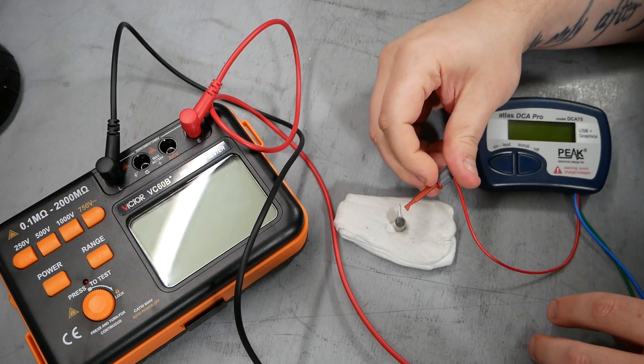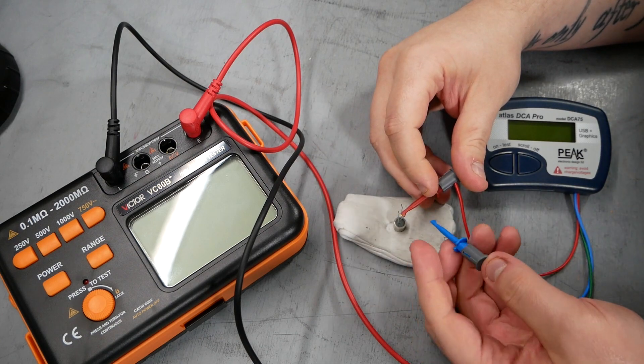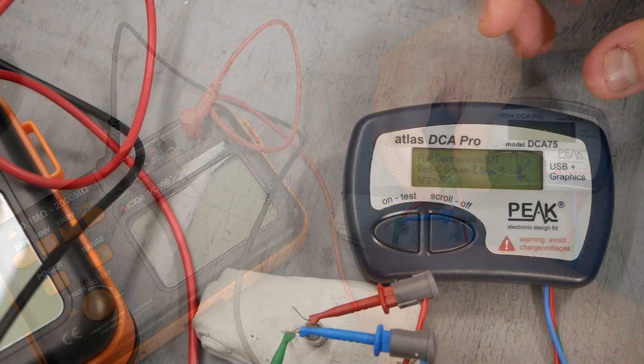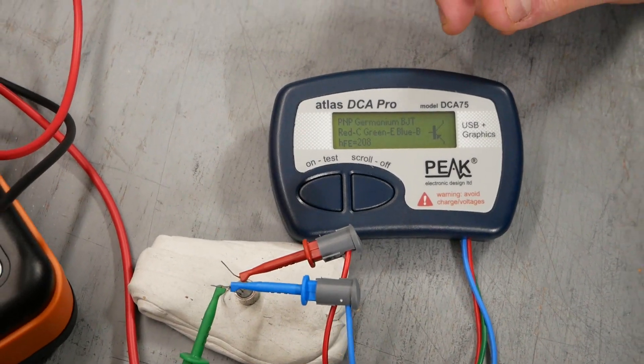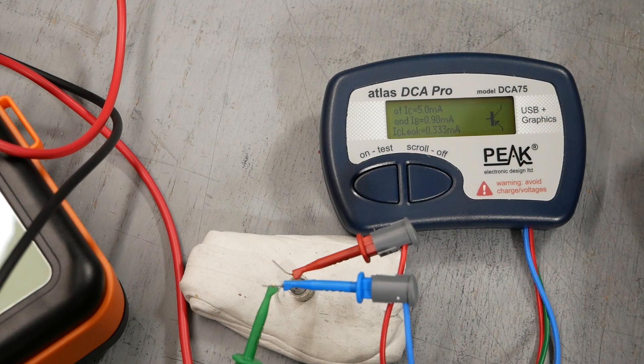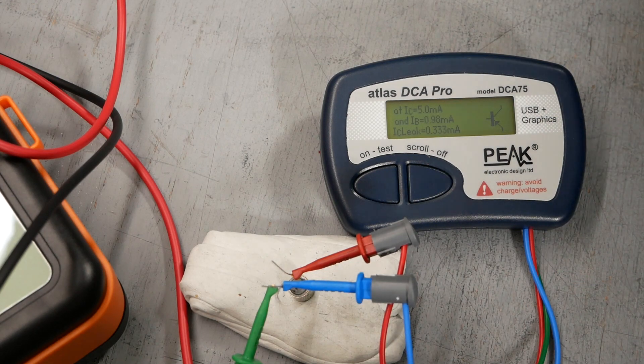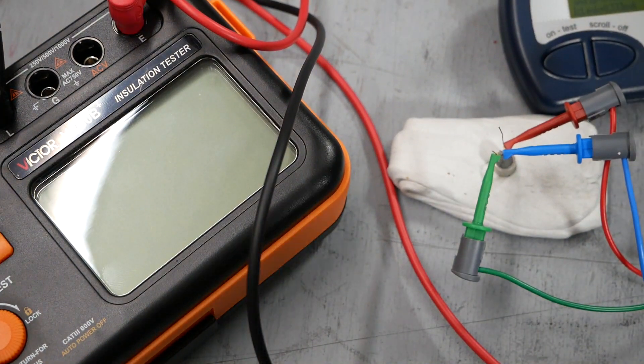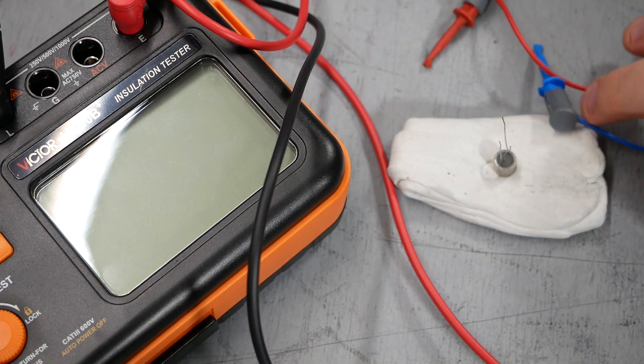We'll test this on the peak. So this is probably going to come out working because that shield is only shorting to one electrode. This is an instance where cutting off the shield lead will probably work. 208 HFE. Leakage of 333 microamps, which is on the higher side, but still potentially usable. Let's give it a shock and see how that changes.